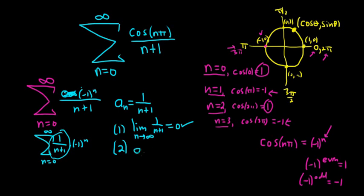The second condition is that your sequence is non-increasing. Well, certainly 1 over n plus 1 gets closer and closer to 0 and it's monotonic. So it's certainly getting smaller, it's non-increasing.